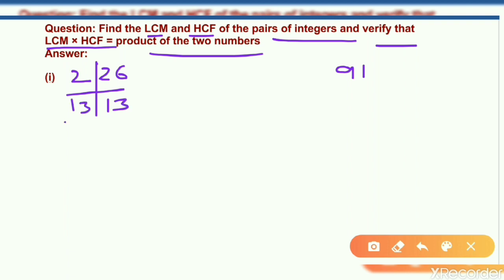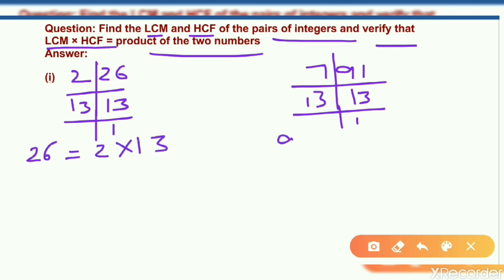And in case of 91 it is divisible by 7. 7 ones are 7, 7 threes are 21 and 13 ones are 13. So here are the factors of 26 which is 2 multiply 13 and 91 in terms of prime is 7 multiply 13.